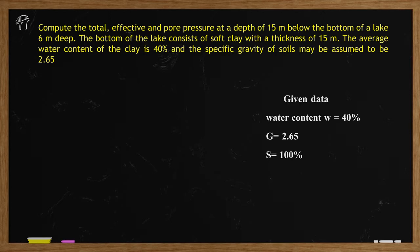So this is the statement given to us: compute total, effective, and pore water pressure at a depth of 15 meters below the bottom of the lake. The bottom of the lake consists of soft clay with a thickness of 15 meters. The average water content of the clay is 40% and the specific gravity of the soil may be assumed as 2.65.